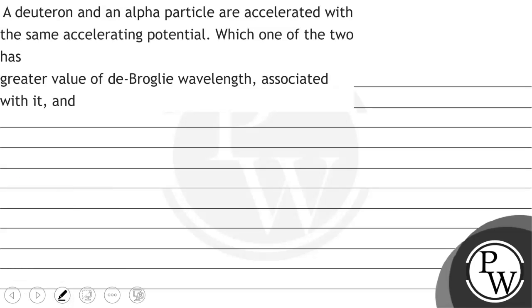Hello, let's read the question. The question says that a deuteron and an alpha particle are accelerated with the same accelerating potential. Which one of the two has greater value of de Broglie wavelength associated with it?